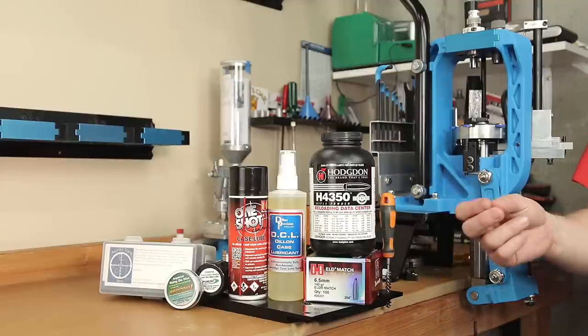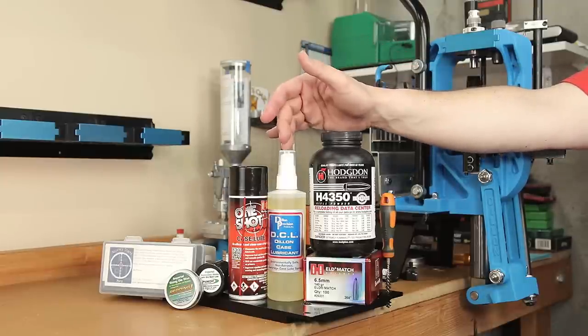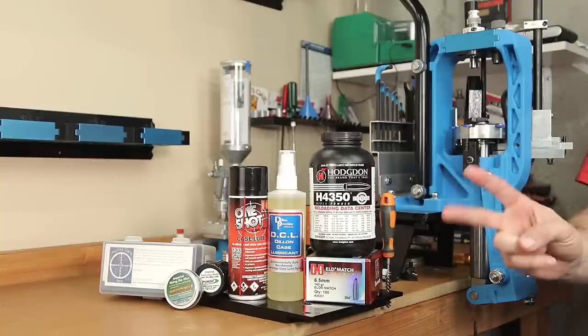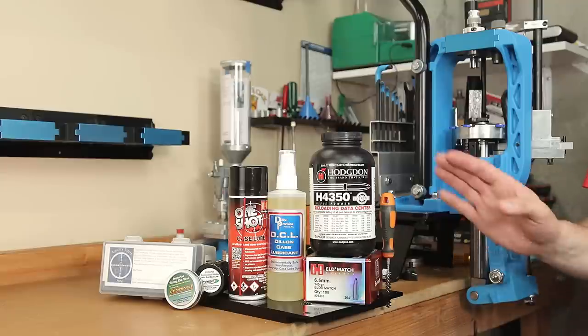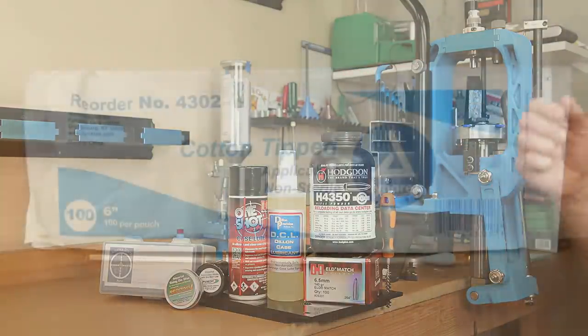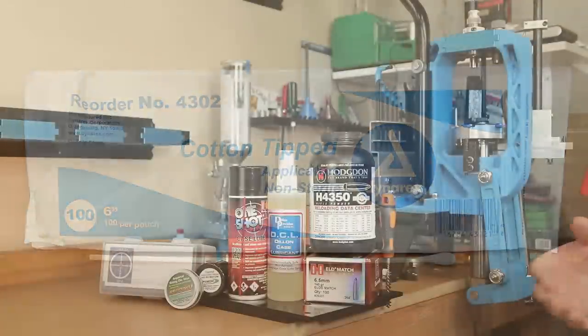The next step is going to be the same thing except with Dillon Case Lube. The Dillon Case Lube is a lanolin-based formula. I'm not sure what the effect of leaving that in our necks is going to be, so we're going to test two configurations with it: one just brushing it out like we normally did, and another step where we use a Q-tip to remove the Dillon Case Lube and then brush them as well.